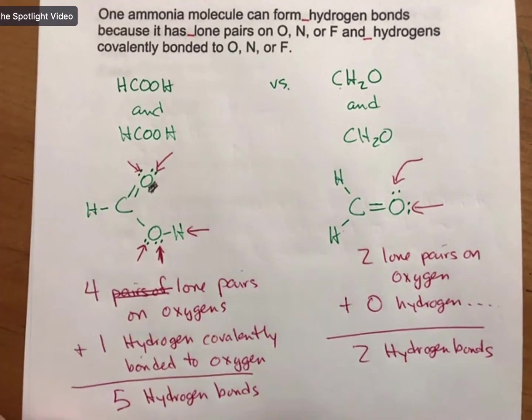Plus zero hydrogen covalently bonded to oxygen. So it can form two hydrogen bonds. And so you'll have to do it for ammonia or whatever molecule you pull up there.